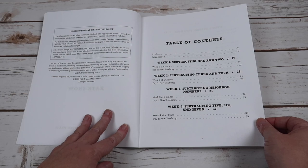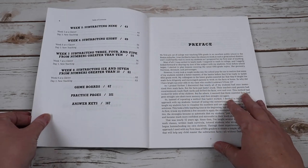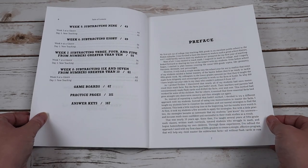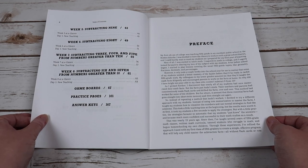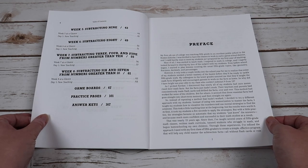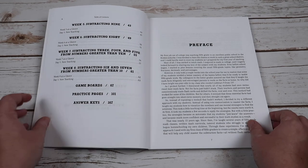Week five is subtracting nine. Week six is subtracting eight. Week seven is subtracting three, four, and five from numbers greater than 10. And week eight is subtracting six and seven from numbers greater than 10.